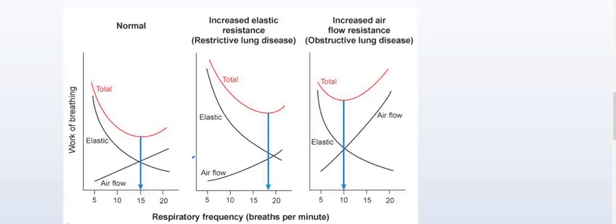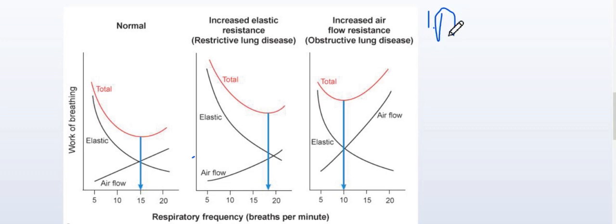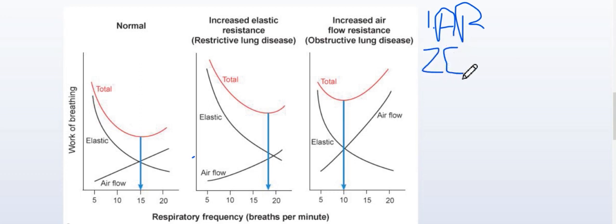Today I am going to teach you the work of breathing. To learn work of breathing, we have to note two important things: work of breathing is actually the work done to overcome two kinds of resistance — number one, airway resistance, and number two, the elastic resistance.